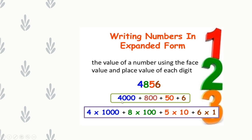4 is in the 1000's place, so 4000. 8 is in the 100's place, so 800. 5 is in the 10's place, so 50. 6 is in the 1's place, so 6. We write it as 4 × 1000 + 8 × 100 + 5 × 10 + 6 × 1. In this way we write the expanded form of a given number.